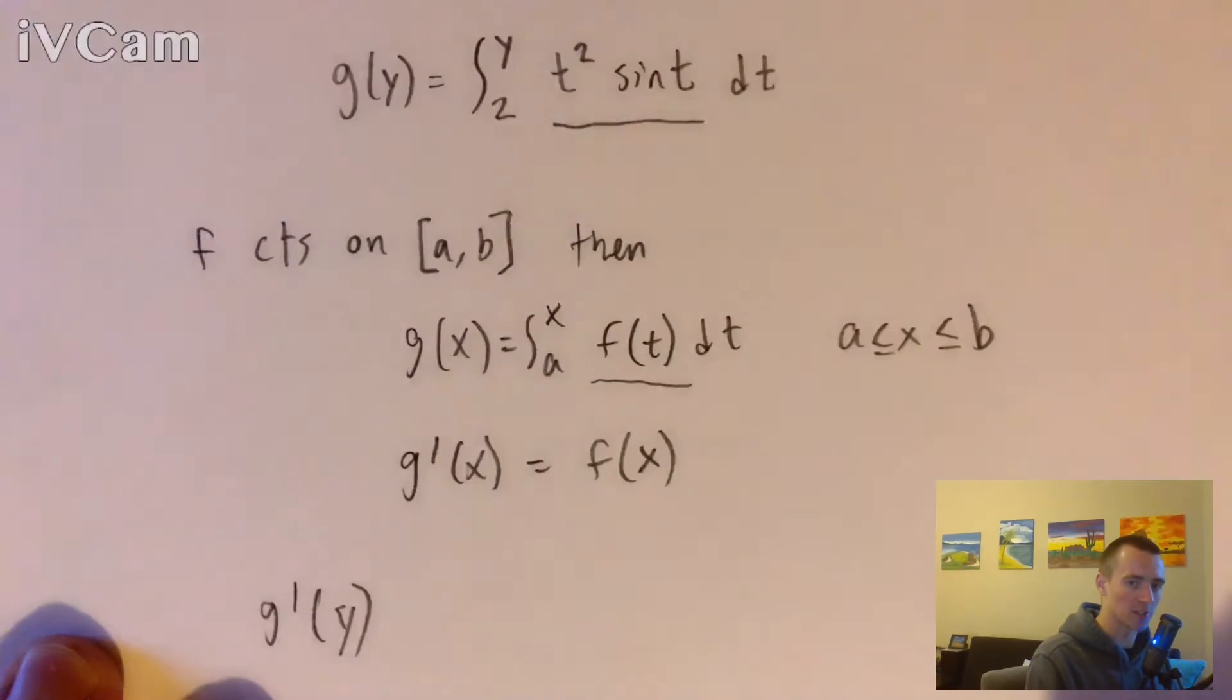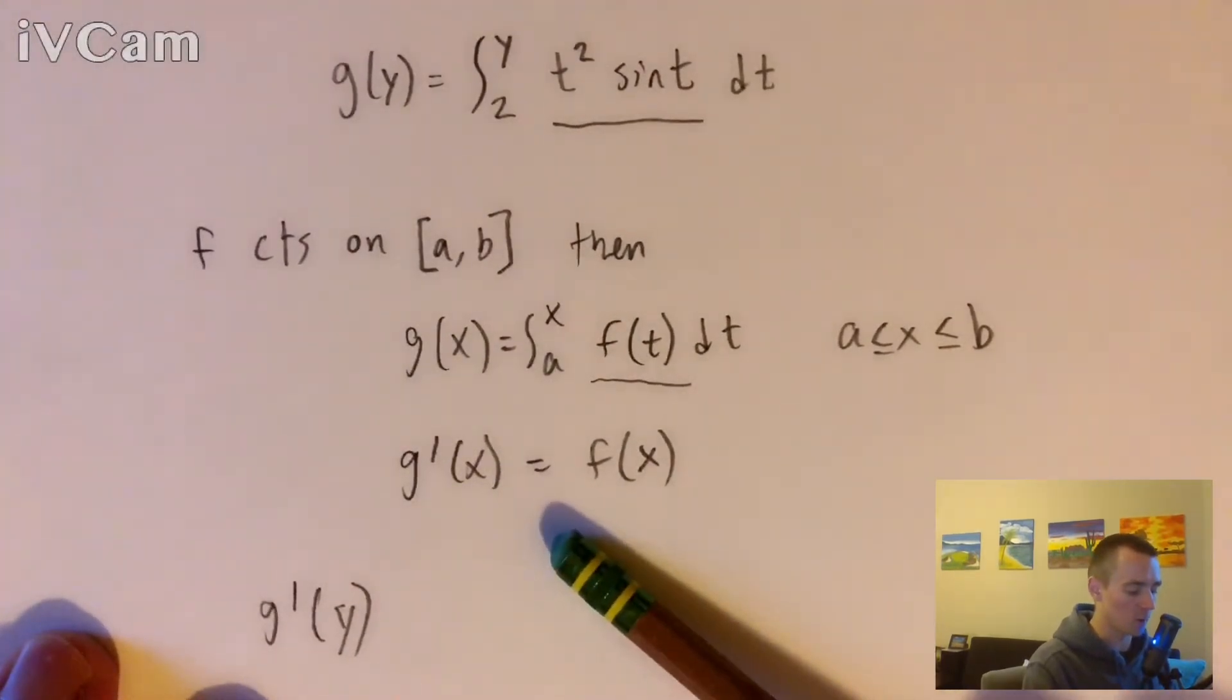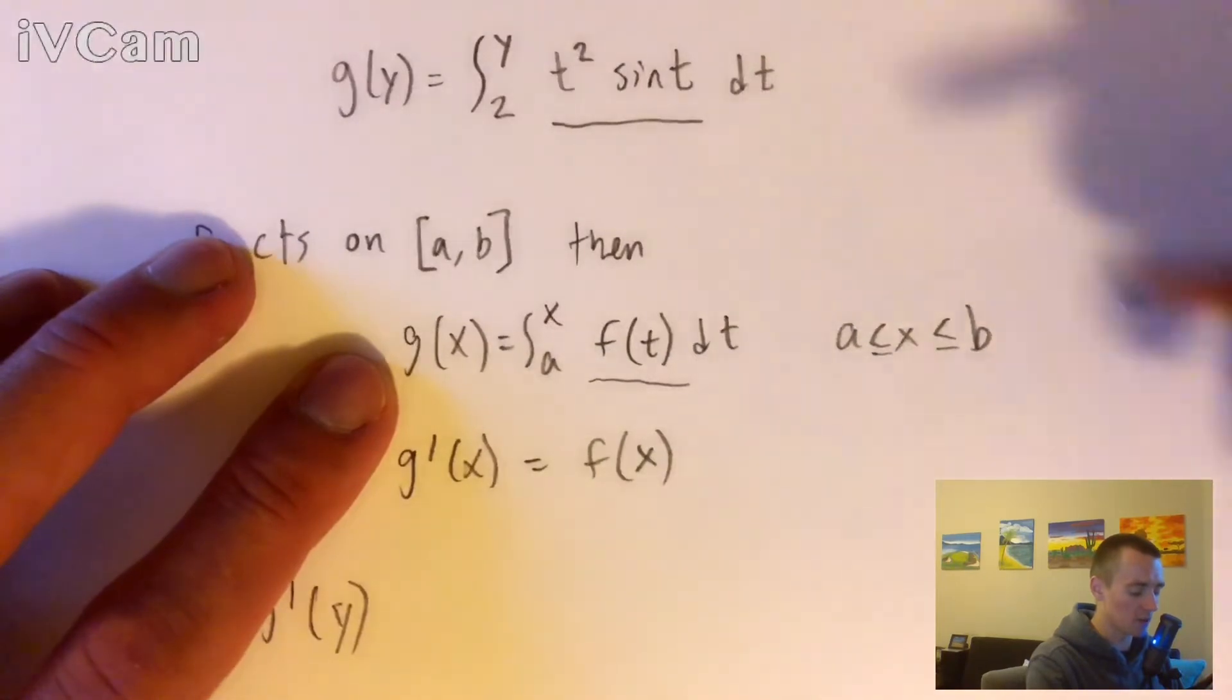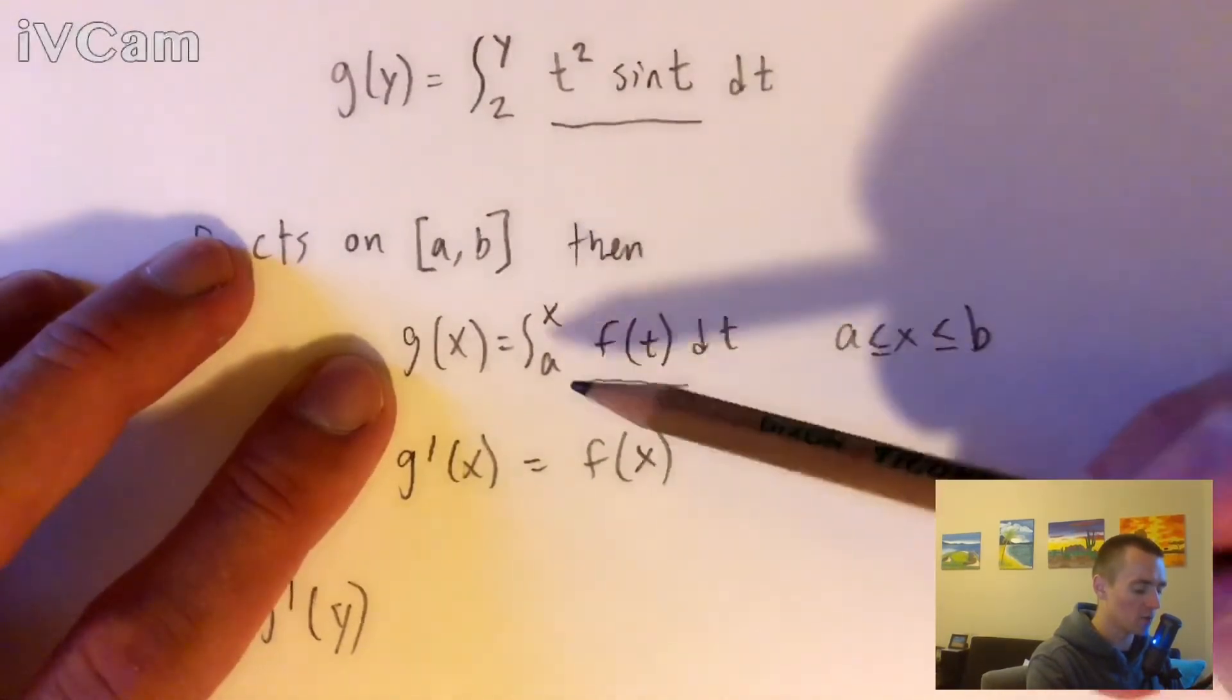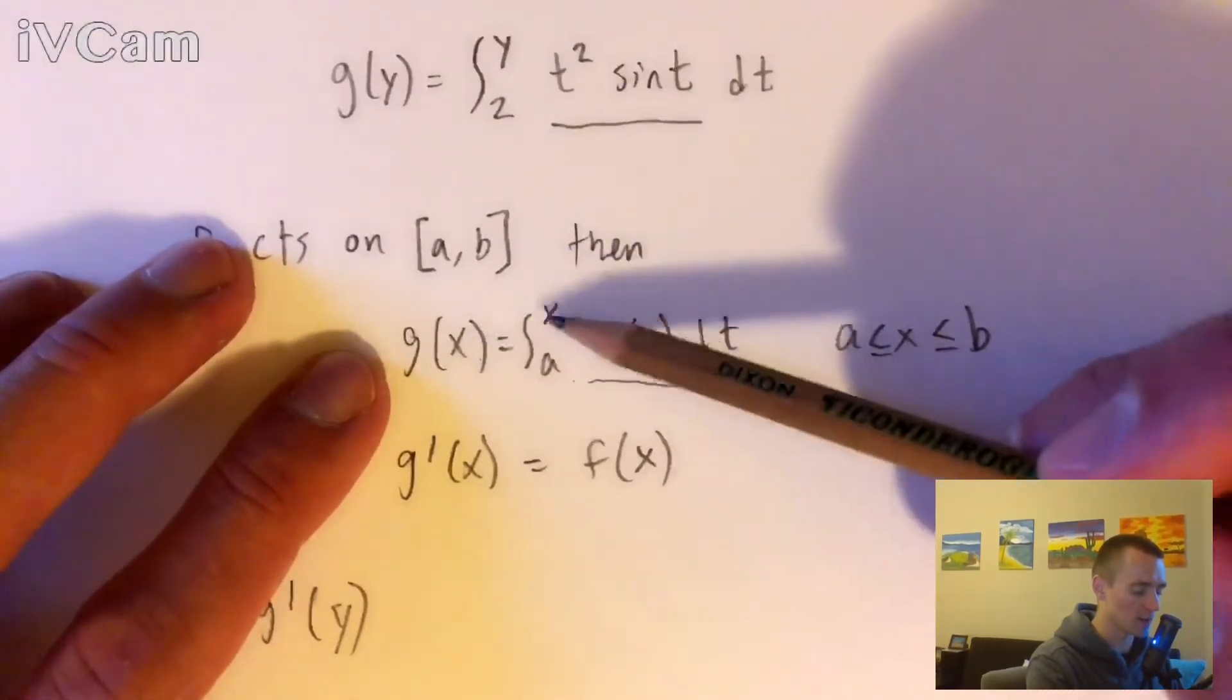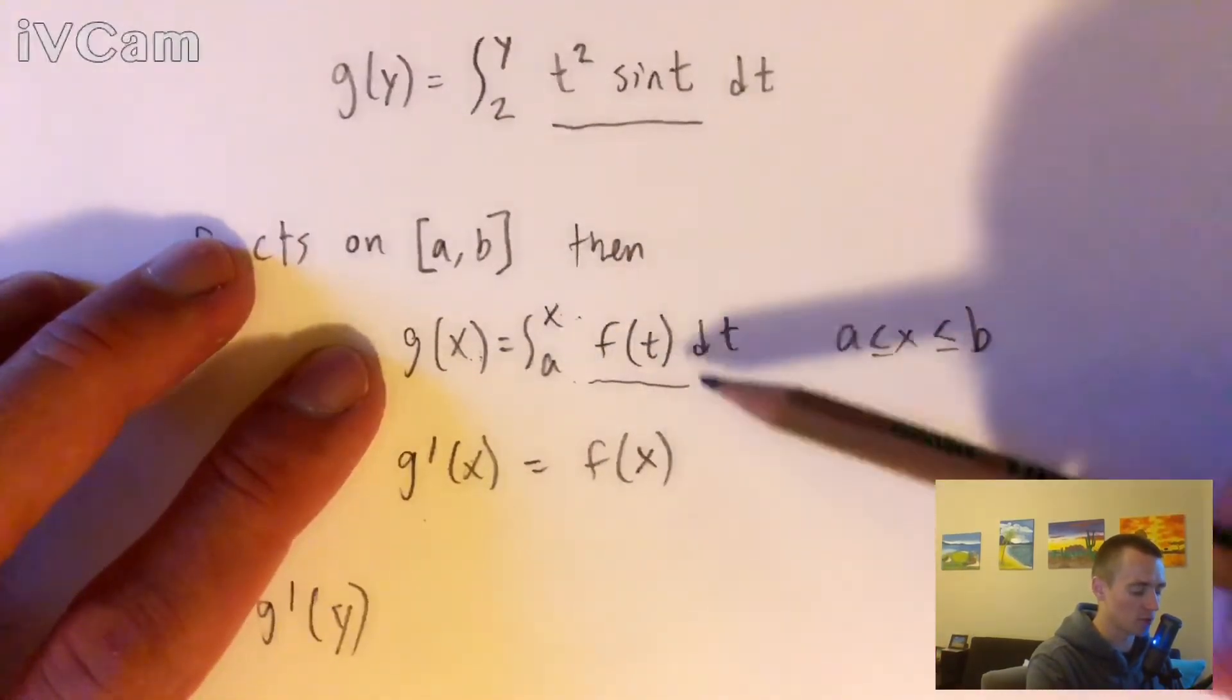Right, this is what the question is asking us to find. Well, by the fundamental theorem of calculus part one, since this function g here is defined as just the integral of this function f of t from some unknown constant a to our variable x, which lines up with our x here, basically tells us that the derivative of this thing is just back to our original function.